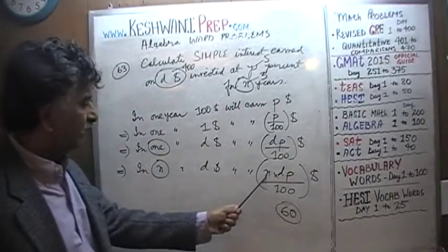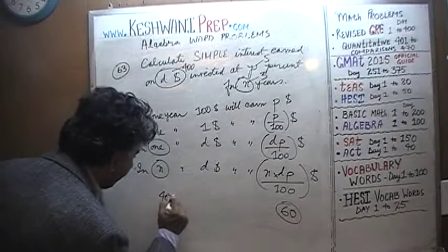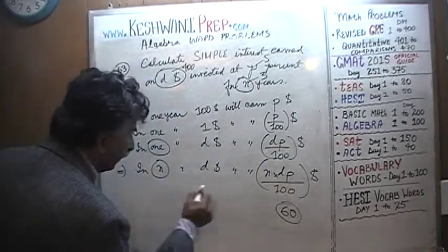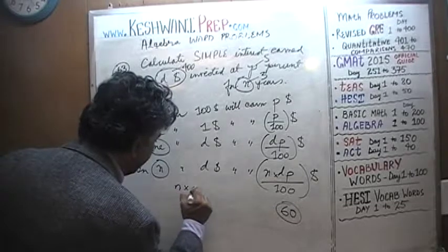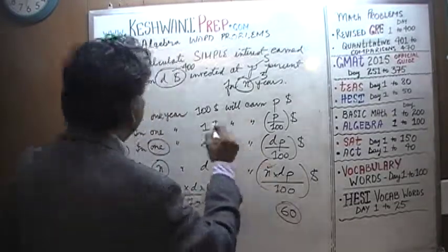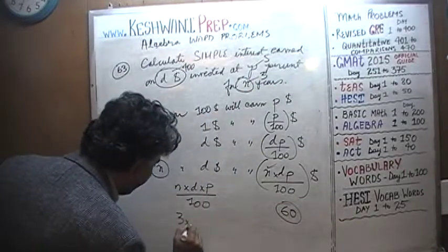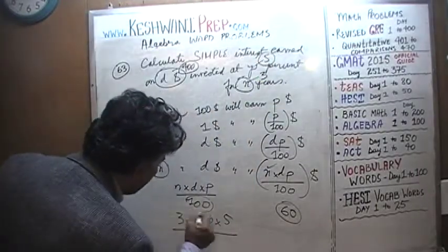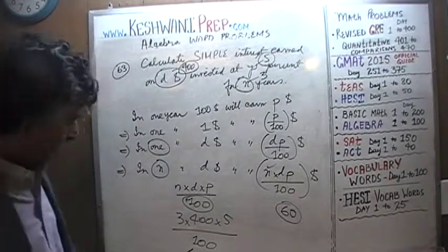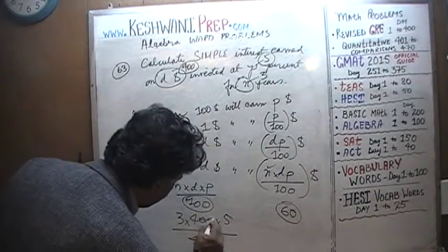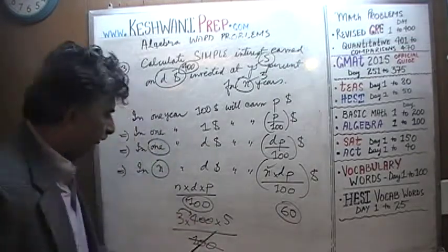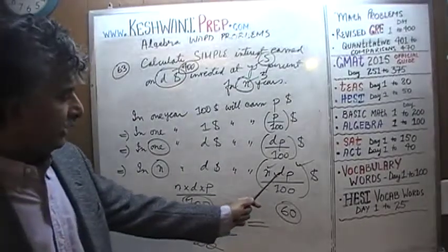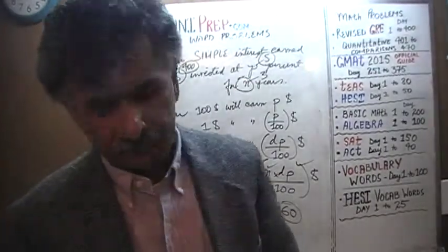If we can get sixty out of our formula, we are in business. N is 3, D is 400, and P is 5 over 100. As you can see, 400 divided by 100 is just four — two zeros cancel out. Three times four is twelve, and twelve times five is sixty, which is exactly what we got. That tells us our answer, N times D times P over 100, is in fact the correct answer. Always a good idea to check your answer.